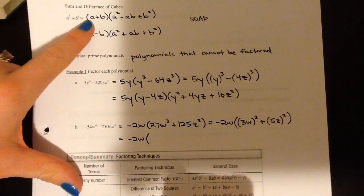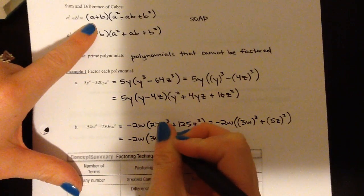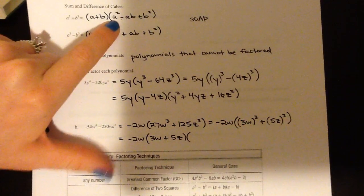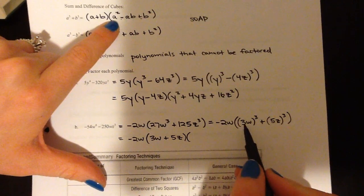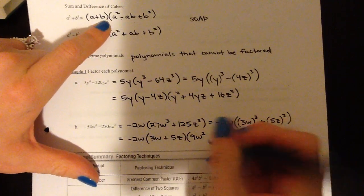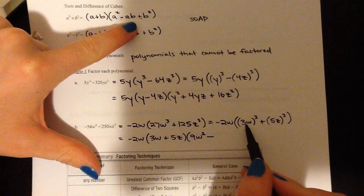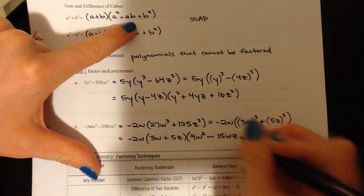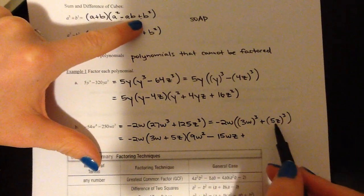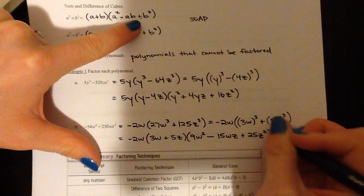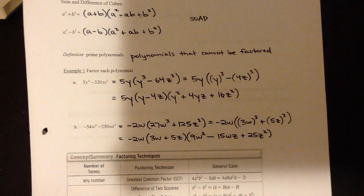I start with my binomial — a plus b — so a is replaced by 3w, plus b which is replaced by 5z. Then my trinomial: a squared, so 3w times 3w gives 9w squared. Since this is addition, we switch to subtraction. Then I multiply the two together: 3w times 5z gives 15wz. Then finally I add b squared: 5 times 5 is 25, z times z is z squared. So that is as far as I can factor it — which looks more complicated, but it's actually going to make the solving part a lot easier.